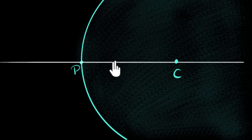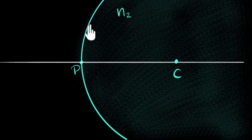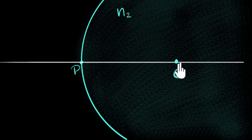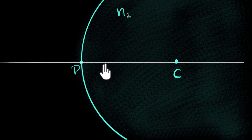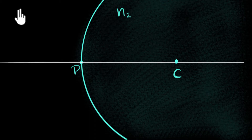Let's imagine we have some kind of medium over here which has a refractive index n2, and its boundary — we'll assume it's a curved surface, a spherically curved surface. It's a part of a sphere which has a center of curvature over here, and that midpoint of that curvature is the pole. This is the principal axis. Let's also assume that the outside medium has a different refractive index, n1.